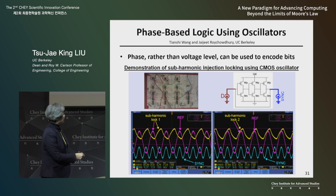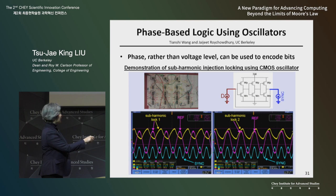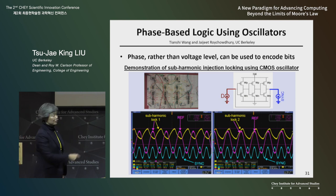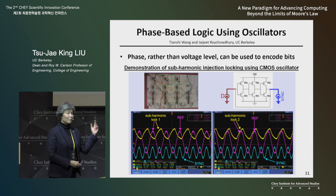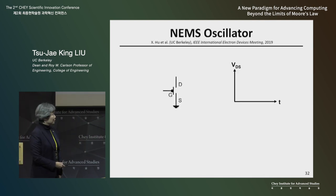That signal oscillates up and down. We look at a reference oscillating signal. There are two stable configurations: the signal can be out of phase with the reference signal, or it can be in phase — reaching the peak at the same time as the reference. So rather than high voltage or low voltage, you can encode information as in-phase or out-of-phase. It turns out there are interesting computing architectures enabled by arrays of oscillators to perform functions much faster and with much less energy.